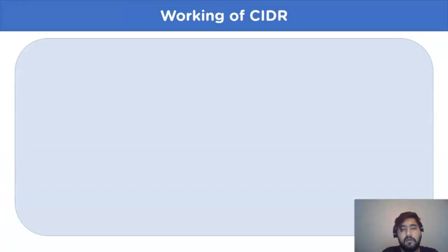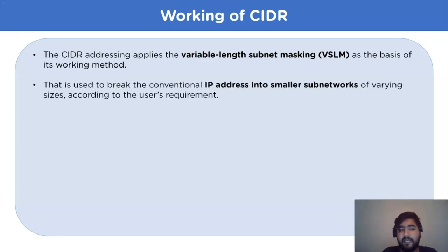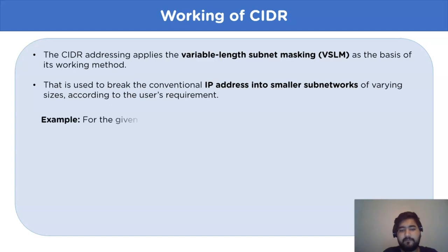Now let's move on to the working of CIDR. CIDR addressing applies Variable Length Subnet Masking, or VLSM, as the basis of its working method. This is used to break conventional IP addresses into smaller subnetworks of varying sizes according to the user's requirement. Let's take a look at an example to understand the working process.